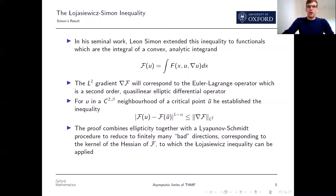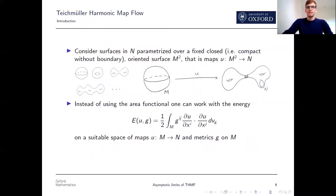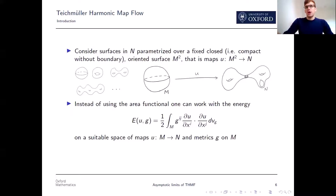Now let me get on to the Teichmuller harmonic map flow and talk about flowing to minimal surfaces. For us, minimal surfaces are always parameterized over a fixed, closed, oriented surface M — a two-dimensional surface determined by its genus: spheres, tori, and tori with more holes. Before we had geodesics; now things are in higher dimensions. Say we're considering maps from the sphere into our high-dimensional target manifold N, as drawn here. For various reasons, one might not actually want to consider the area functional directly, so we consider an analog of the Dirichlet energy. We need to fix a metric G on M to measure lengths and take derivatives.